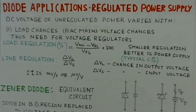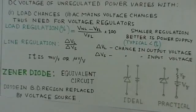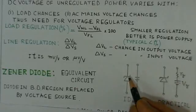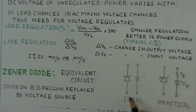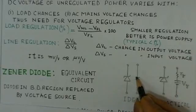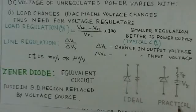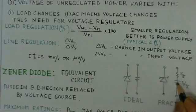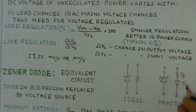Before we discuss zener diode applications as a voltage regulator, we look at the equivalent circuit for a zener regulator. An ideal zener regulator can be replaced by a battery or standard voltage source. However, if the zener diode is not ideal — if it is a practical zener diode — then this voltage source is in series with a resistance called the zener resistance.